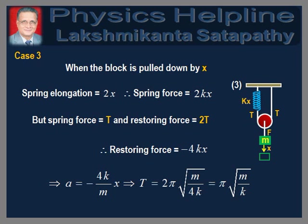In case 3, when the block is pulled down by x, the spring elongation is equal to 2x. Therefore, spring force is equal to 2Kx. From the figure, it is clear that spring force is equal to T and restoring force is equal to 2T. Therefore, restoring force is equal to minus 4Kx, and acceleration is equal to minus 4K over m into x, which implies T is equal to π√(m/K).